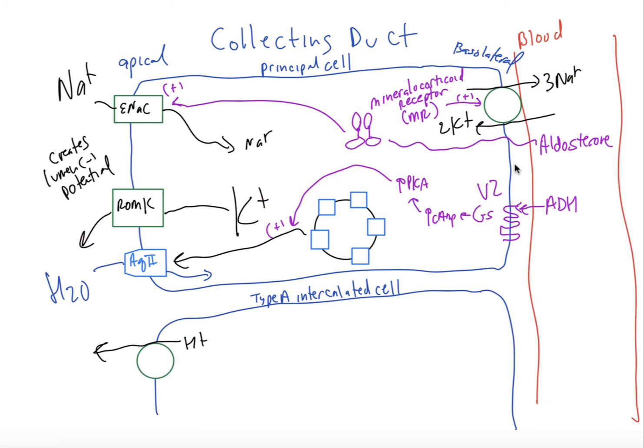So now we finally have the collecting duct here. So we have two cell types, the principal and the type A intercalated cells. And we have the apical side facing the tubular fluid over here. We have the basolateral facing the blood. Our sodium potassium ATPase pump as usual, setting up the sodium potassium gradients.